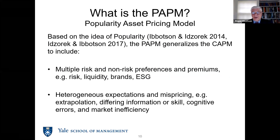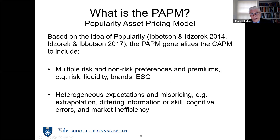It's based on a couple of papers — the first one was actually in 2014 that I co-authored, then another later paper, then that monograph, and I'm working on another couple of papers now on the topic. We put in multiple risk preferences and some non-risk preferences — other things besides risk like liquidity. Liquidity sometimes has been thought of as a risk, but I don't primarily think of it as a risk. But also even behavioral things like brands or ESG, things that we care about that might not fall into the category of risk. And on a model like the PAPM, we can put in heterogeneous expectations, which allows for mispricing.